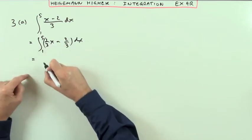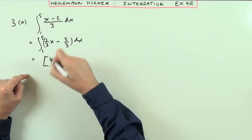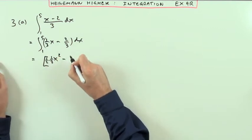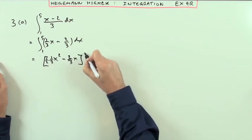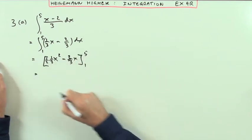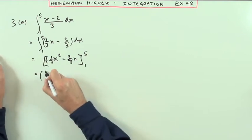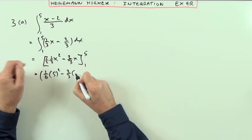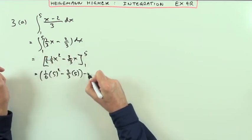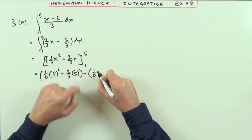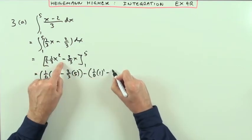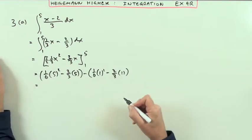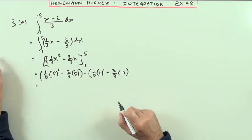That goes up to x squared, divide by 2, so it'll be a half times a third, and the other term goes back to a linear term. Work it out at 5 and subtract the value at 1. So what we've got is a sixth of 5 squared minus two thirds of 5, take away one sixth of 1 squared minus two thirds of 1. It's full of fractions — that's what all of these are going to be.